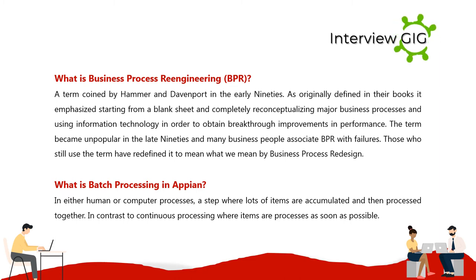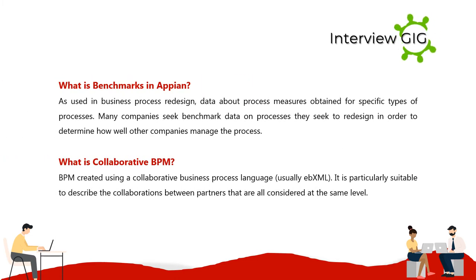What is batch processing in Appian? In human or computer processes, it is a step where lots of items are accumulated and then processed together, in contrast to continuous processing where items are processed as soon as possible. What are benchmarks in Appian? As used in business process redesign, benchmarks are data about process measures obtained for specific types of processes. Many companies seek benchmark data on processes they wish to redesign to determine how well other companies manage those processes.